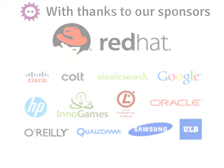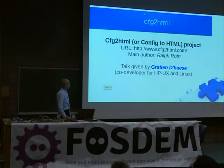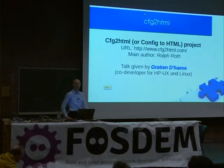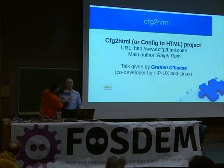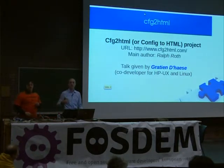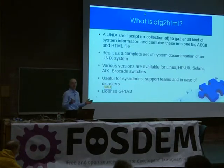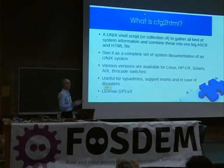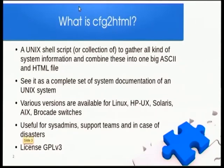For the next talk, we have Gratien D'haese who will talk about the Linux Configuration Collector. Config2HTML is a plain shell script that collects everything from your system: system parameters, IP configuration, whatever you configure or put into the script. It can be collected into a big text file or a big HTML file — that's the main purpose of Config2HTML.